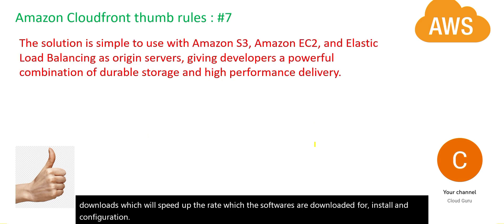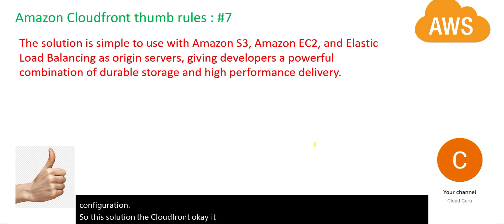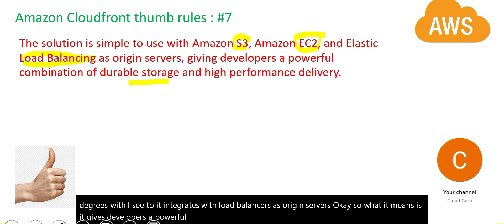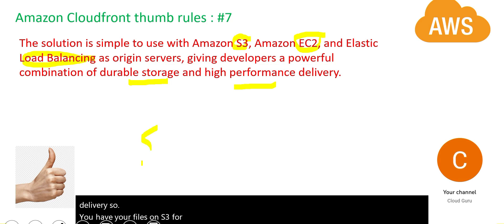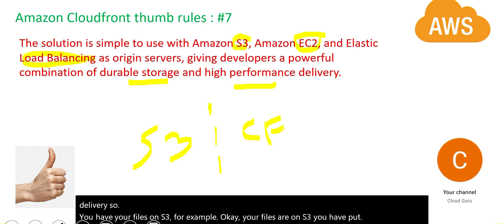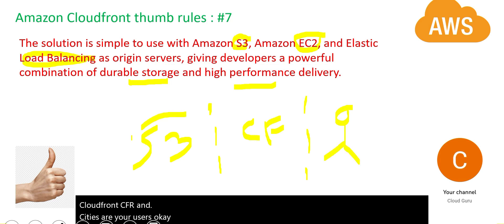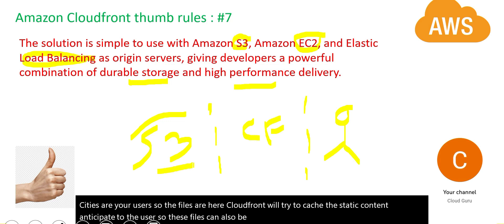CloudFront integrates with a variety of services — it integrates with S3, EC2, and load balancers as origin servers. This gives developers a powerful combination of durable storage and high-performance delivery. For example, your files can be on S3, and CloudFront will cache the static content and serve it to users. Those files can also be video files for Netflix.